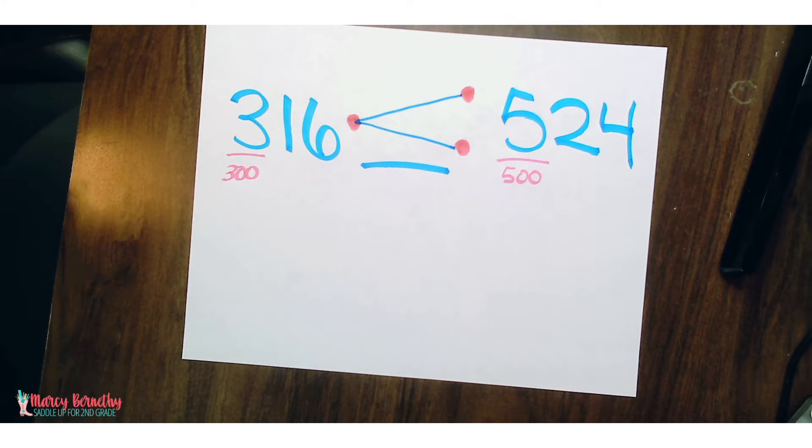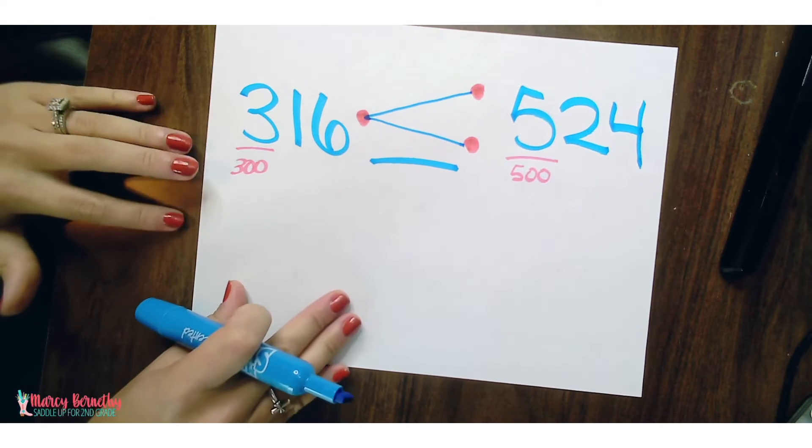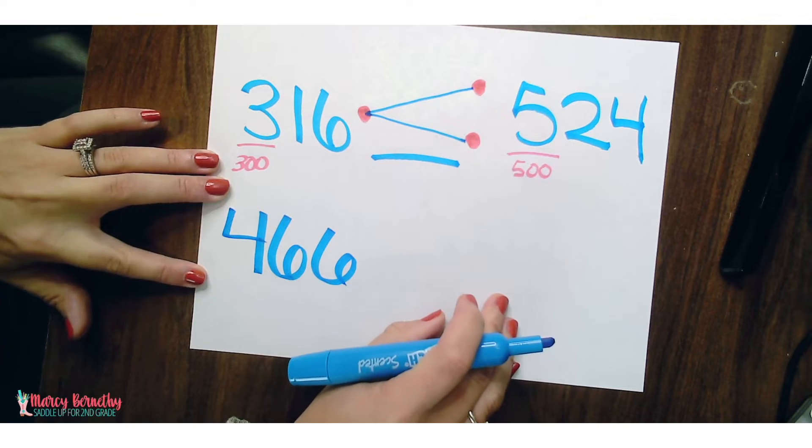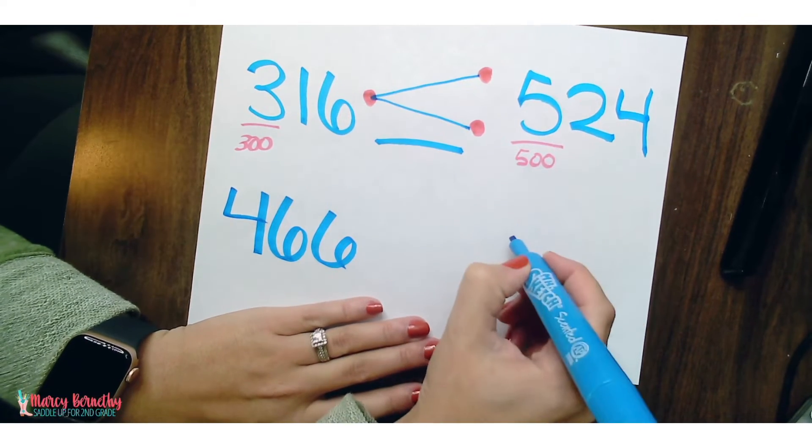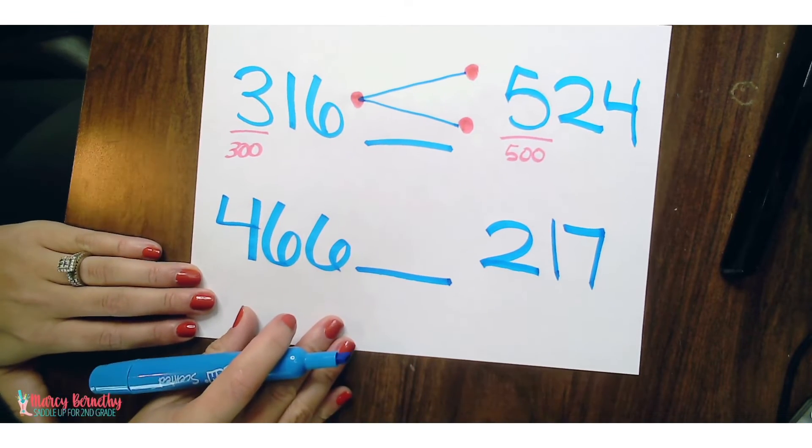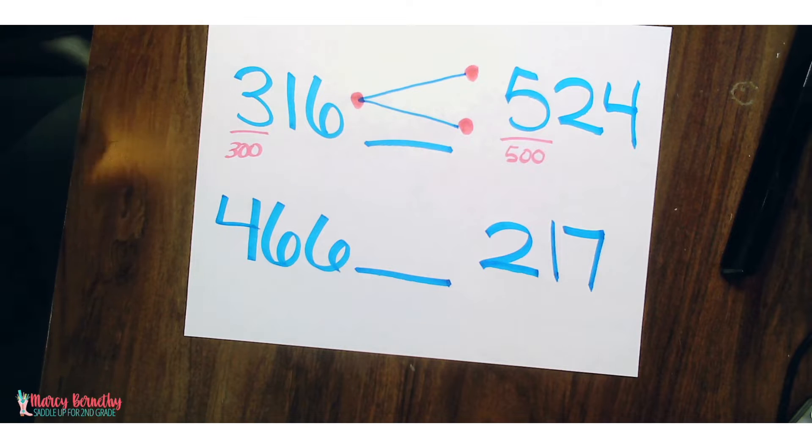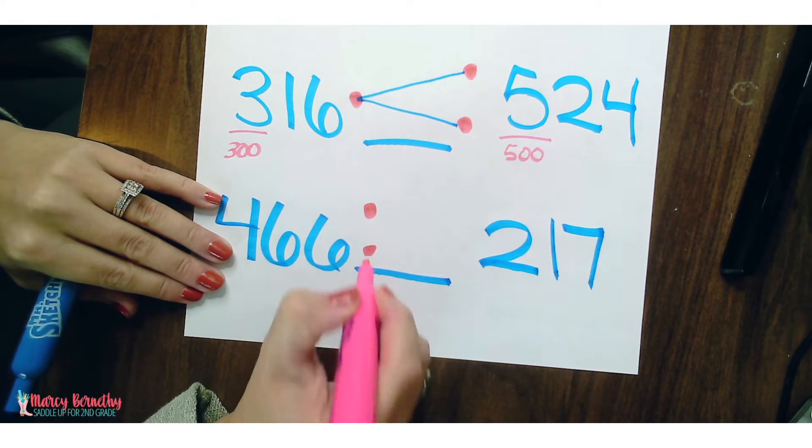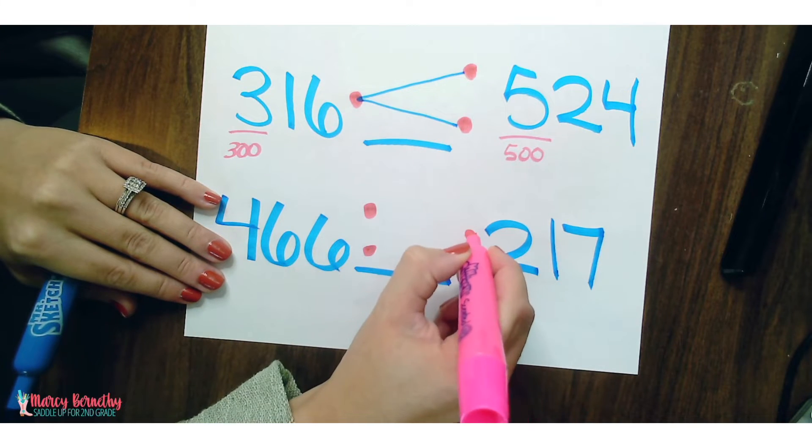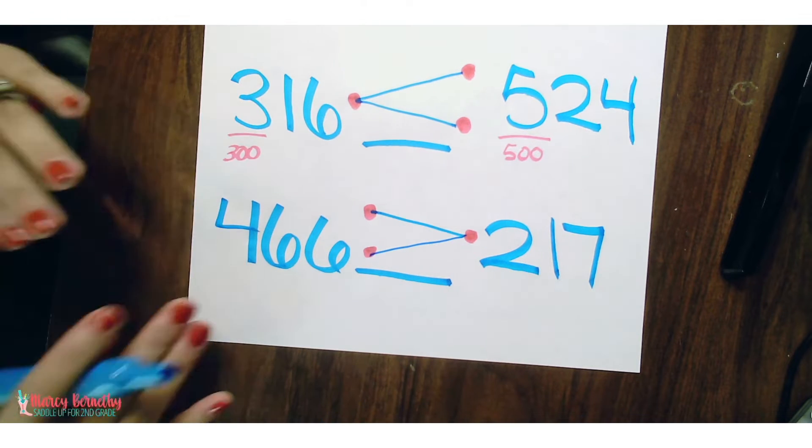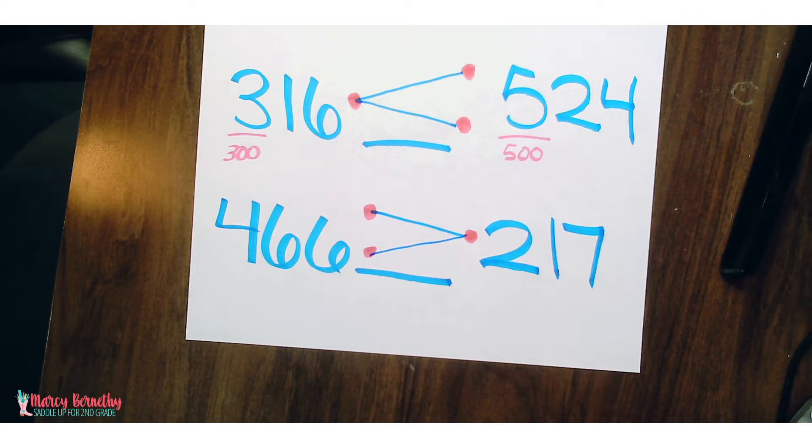Let me show you another example. Let's say we have the number 466 and the number 217. When comparing using the dot method, the larger number or the greater number is going to get 2 dots, the smaller is going to get 1 dot. Then they will draw lines to connect the dots to form the correct symbol.